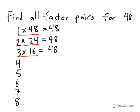How about 4? They keep on going because 4 times 12 equals 48, which means that 4 times 12 is a factor pair. What about the number 5?